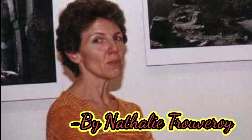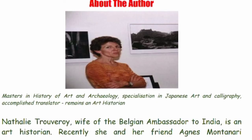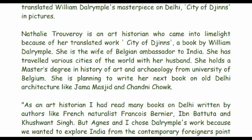The author is Natalie Travaro. She has a master's in history of art and archaeology with specialization in Japanese art and calligraphy. She is an accomplished translator and remains focused on art history. Natalie Travaro was the wife of the Belgian ambassador to India. She and her friend Agnes Montanari translated William Dalrymple's masterpiece on Delhi, 'City of Djinns,' in pictures.